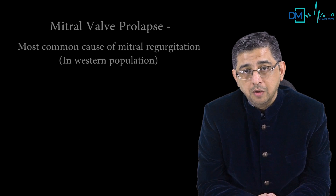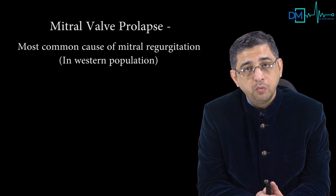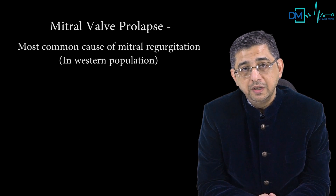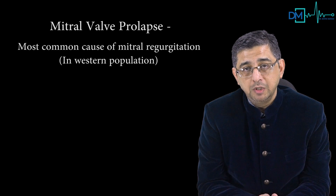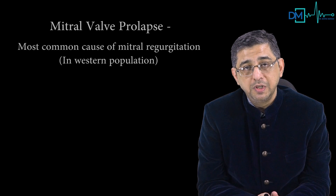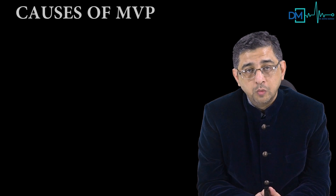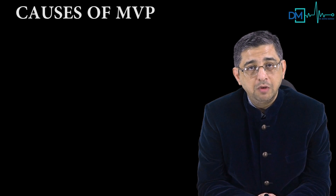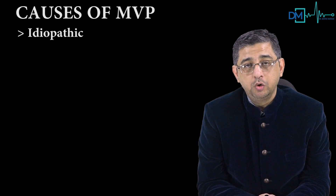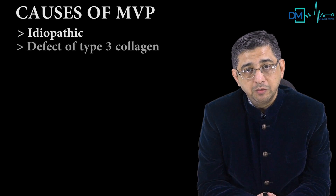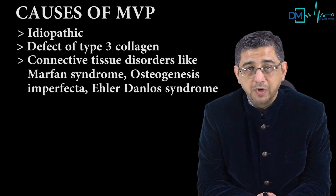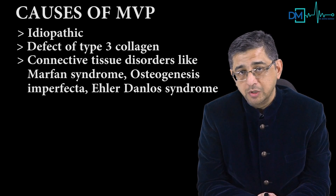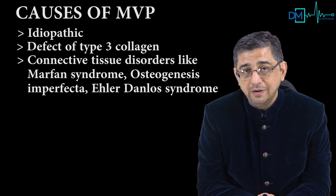In the western population, mitral valve prolapse is the number one cause of mitral regurgitation. The most common cause of MVP itself is idiopathic. It can be genetic, involving defective type 3 collagen, or associated with connective tissue disorders like Marfan syndrome, osteogenesis imperfecta, or Ehlers-Danlos syndrome.